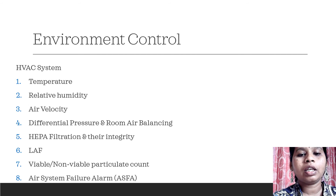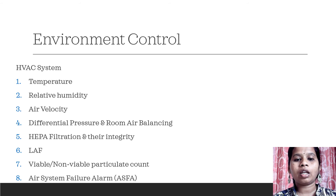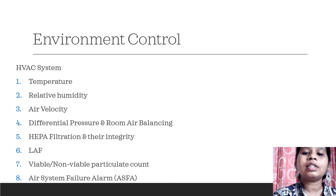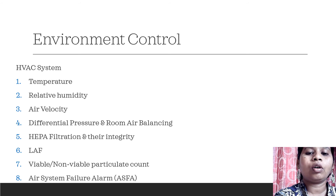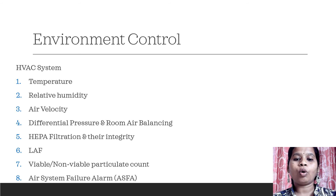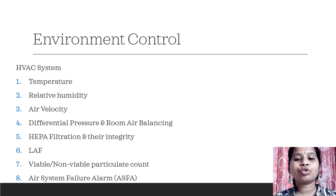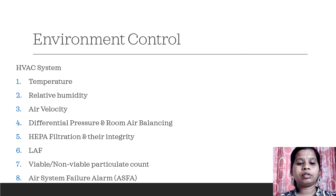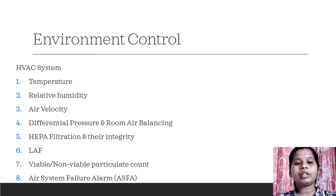Next comes air system failure. All aseptic areas A and B must be fitted with alarms so that if there is any difficulty or the area is exceeding the standards, an audio alarm will be played. This makes it easy to detect that the area is not safe and work should be stopped at that point. By considering these eight factors, the HVAC system will be properly functioning.